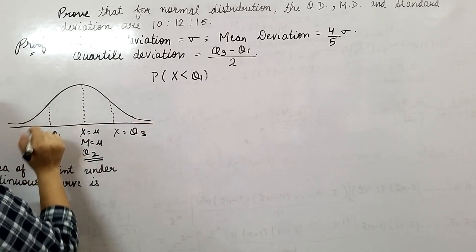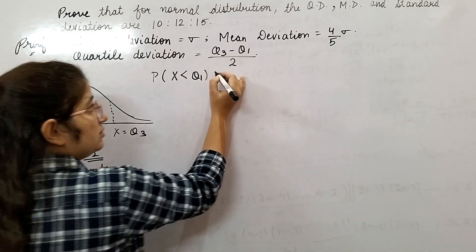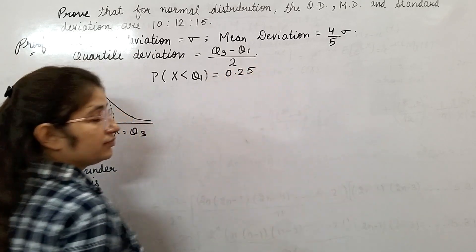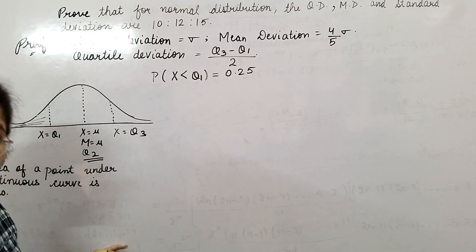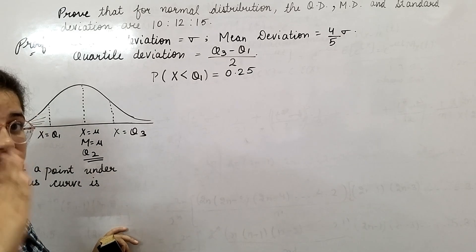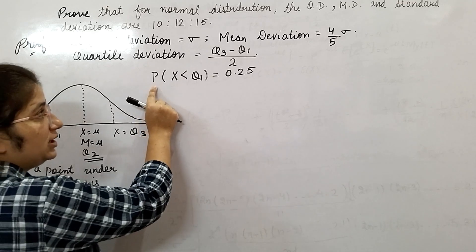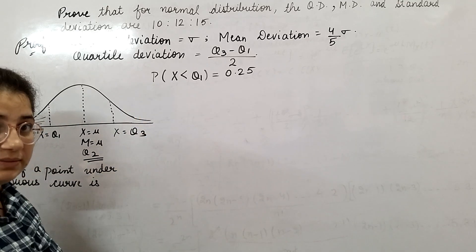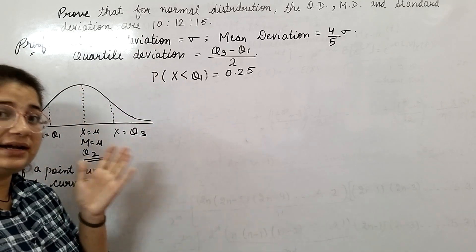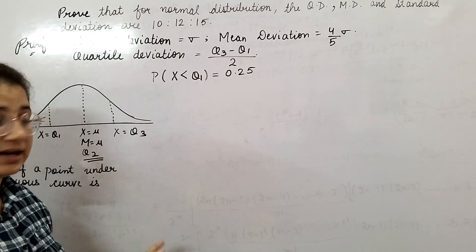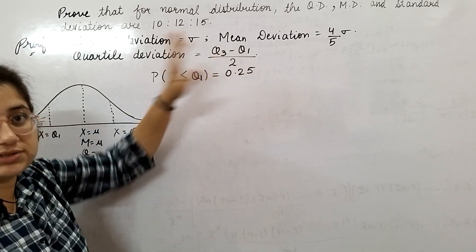x less than q1—this portion is 25% of the total. 25% means probability will be 0.25. Now why I had made this dotted line on these points? Because under any normal curve, if you find the area of a point, you will get that area is zero. If the area is zero, probability is also zero. That's why I am not writing equality here. Either I will write greater than or smaller than, because at equality the probability is zero.